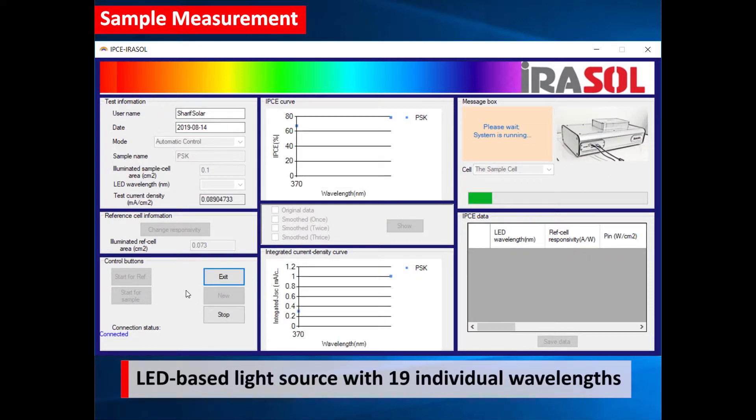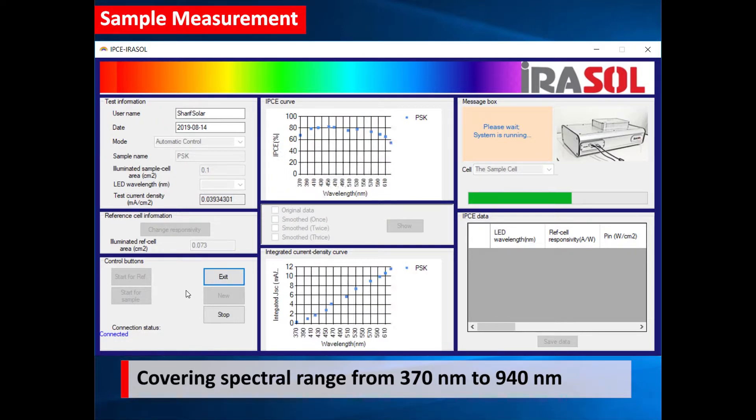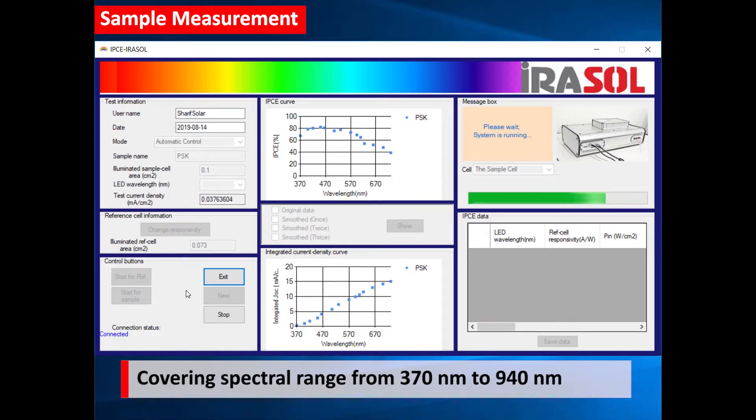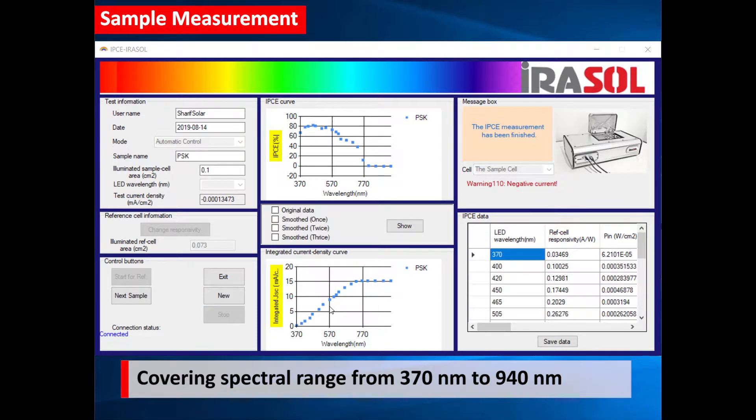Measurement is made at 19 individual wavelengths, starting from 370 nm to 940 nm. Both IPCE and integrated current density are measured and displayed.